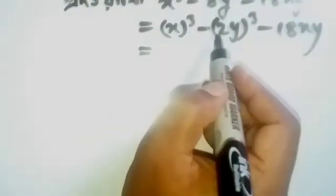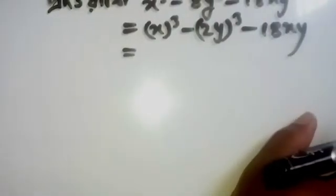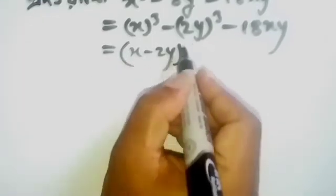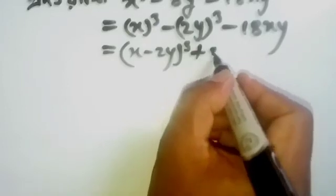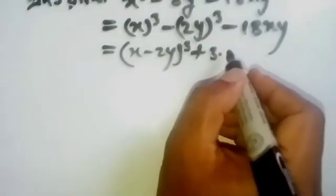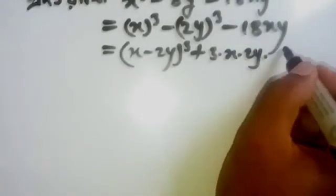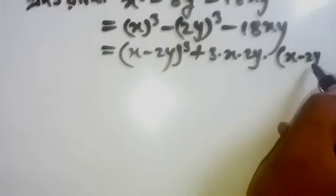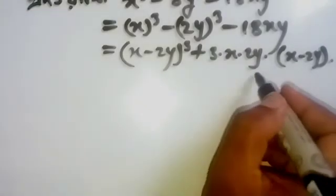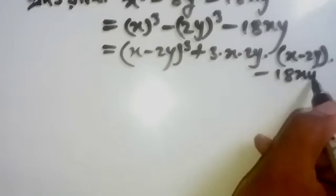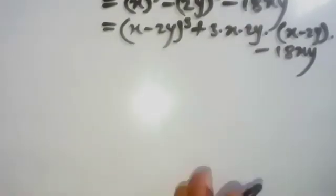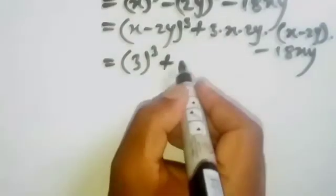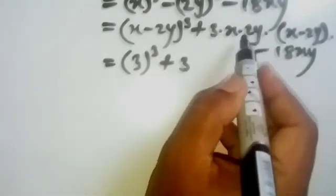We take x, and apply a cube minus b cubed. The expression is x minus 2y whole cube. So we apply: a minus b whole cube plus formula, plus 3 into x into 2y, where x into 2y is our a into b. We have x minus 2y, and the result involves minus 18xy. We set x minus 2y summing to 3, and 3 whole cube, plus 3 into 2.